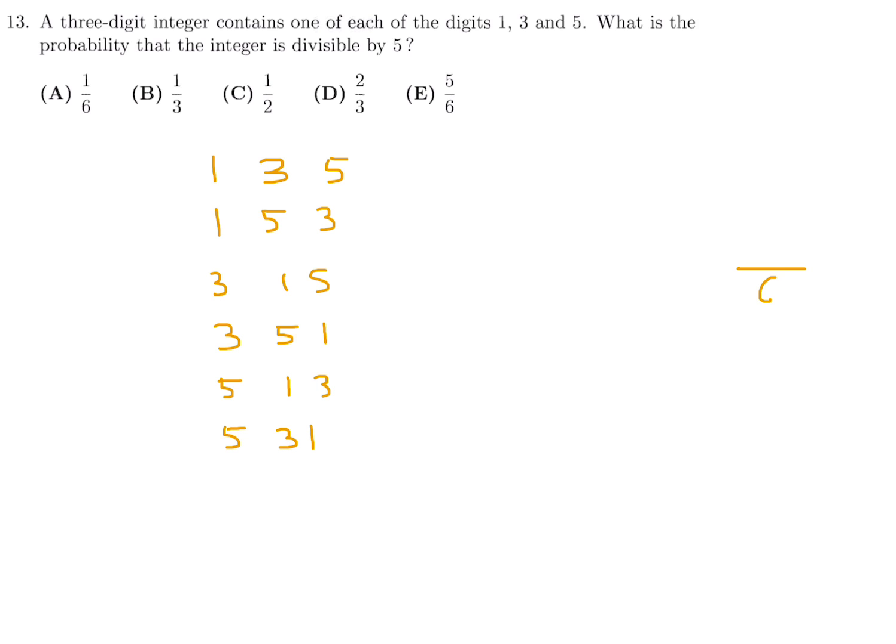Now there's 6 of them, so the probability is going to be something over 6. How many of these are divisible by 5? Well, a number is divisible by 5 if its final digit is 5 or 0. So this one is divisible by 5 and this one, and those are the only ones. So 2 of the 6. And of course, in lowest terms, that is 1 third. So number 13, the answer is B.